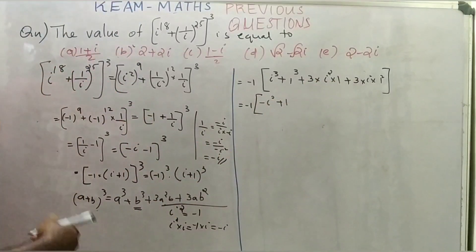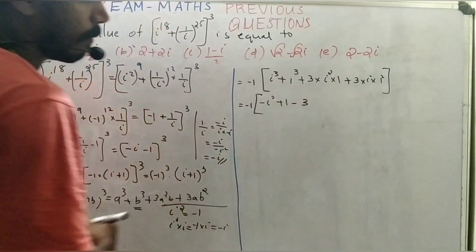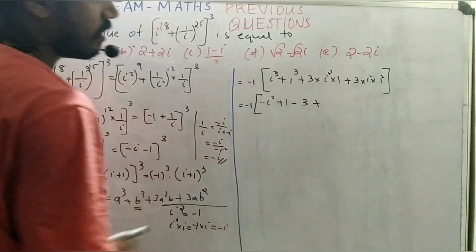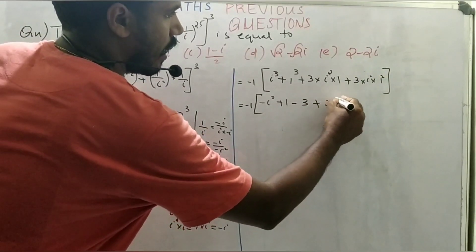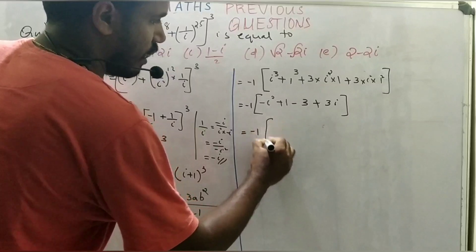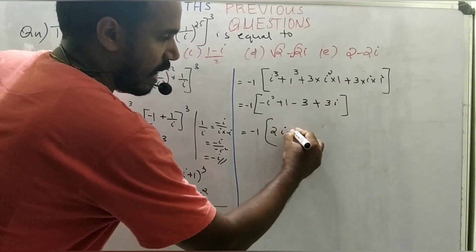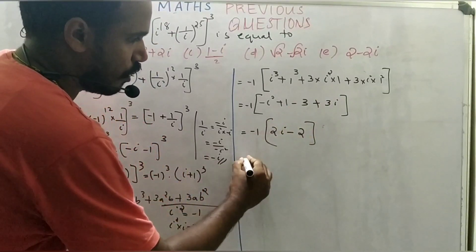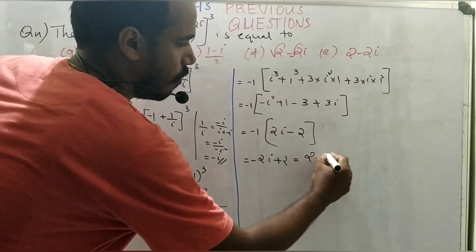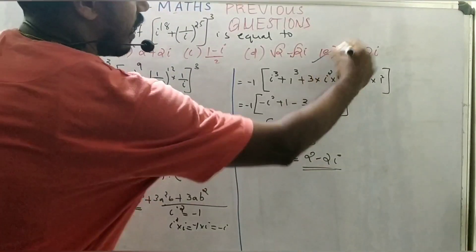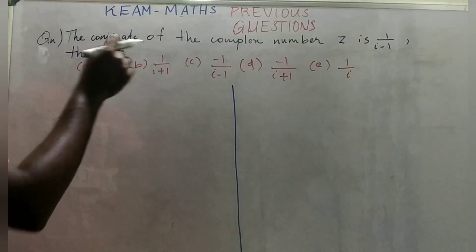We get: -i + 1 + 3·(i²)·1. Since i² = -1, this gives -3. Plus 3·i·1 = +3i. So: -i + 1 - 3 + 3i = 2i - 2, which can be written as 2 - 2i. Option E is the right answer.